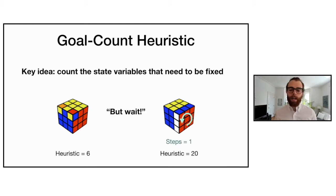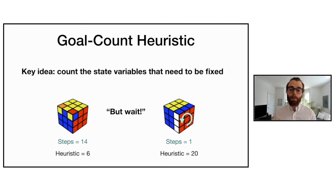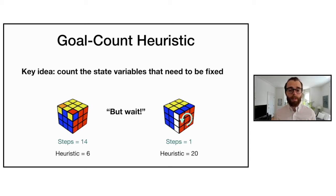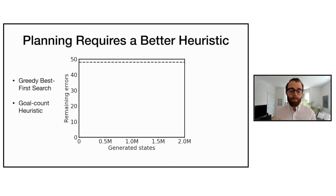You might think the cube with heuristic value 20 can be solved in one step — just a counterclockwise 90-degree turn — and you'd be right. Meanwhile, the cube with heuristic value six actually takes 14 steps to solve. There's a discrepancy between the heuristic, which is higher on the right, and the true cost, which is higher on the left. This shows the goal count heuristic is not especially accurate for the Rubik's Cube — or indeed for many problems.